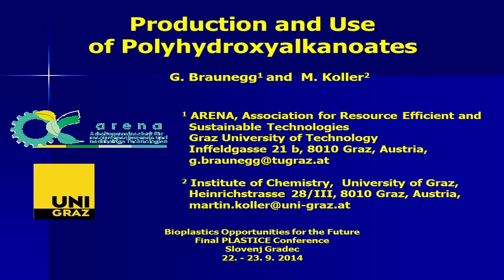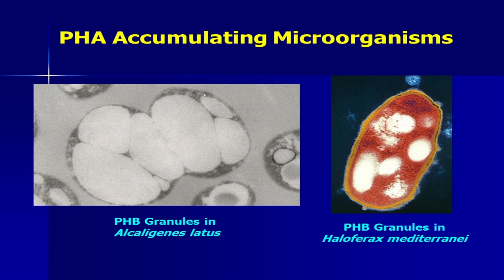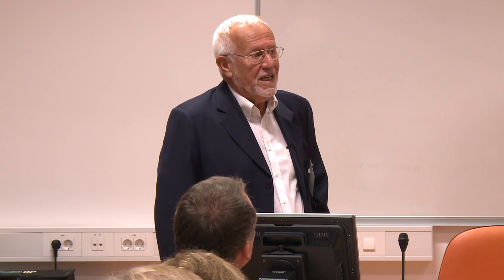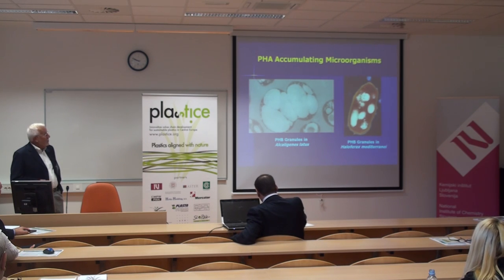What are polyhydroxyalkanoates? They're polyesters, but polyesters normally not made chemically, but by the use of microorganisms. Here I show two of the microorganisms able to produce these polyesters. The one in red is Haloferax mediterranei — an organism that grows in salty environments requiring at least 12% sodium chloride. That makes it easy to keep a pure culture. The second one is Alcaligenes latus, whose cells contain about 90 to 93% polyhydroxyalkanoates inside.